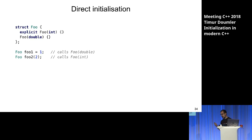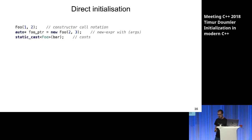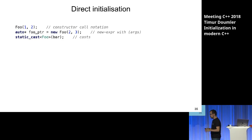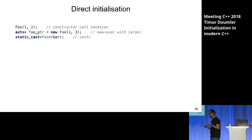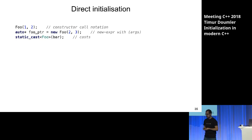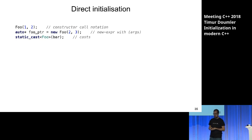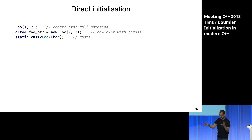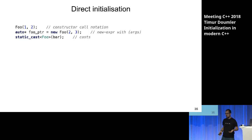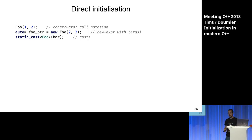Direct initialization also happens in other situations: if you do a constructor call notation creating a temporary with arguments, if you have a new expression with parenthesized initializer, or if you have a static_cast with parens — those are all cases where direct initialization is performed.